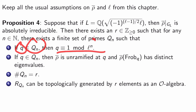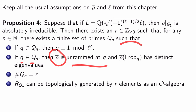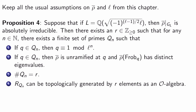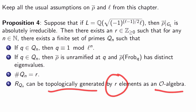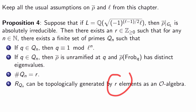The four properties of Q_N are: first, if q is in Q_N then q ≡ 1 mod L^N; second, if q is in Q_N then rho-bar is unramified at q and rho-bar(Frobenius_q) has distinct eigenvalues; third, the cardinality of Q_N is always R; and fourth, R_{Q_N}, the universal deformation ring associated to Q_N, can always be topologically generated by R elements as an O-algebra. This R is independent of N — that's the magic of it all.